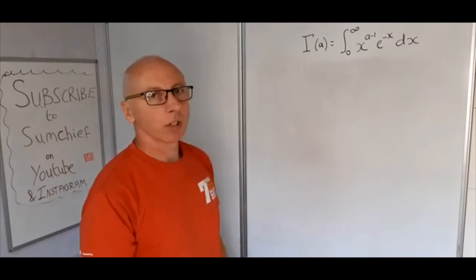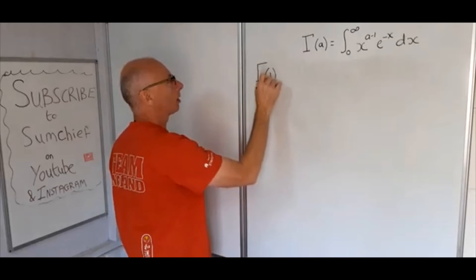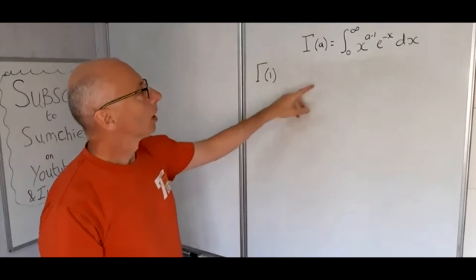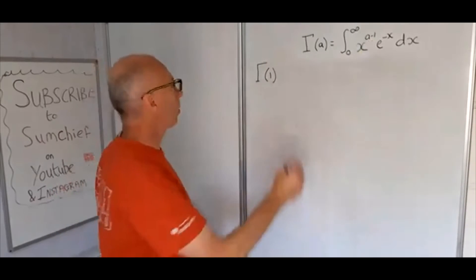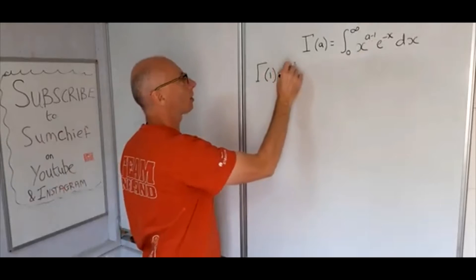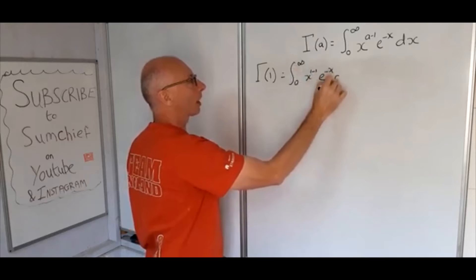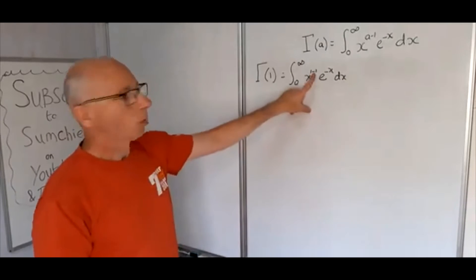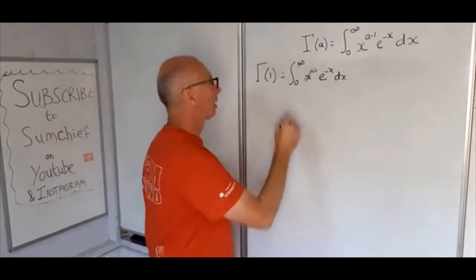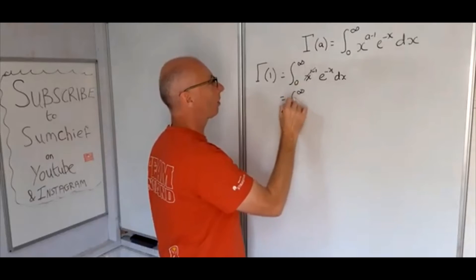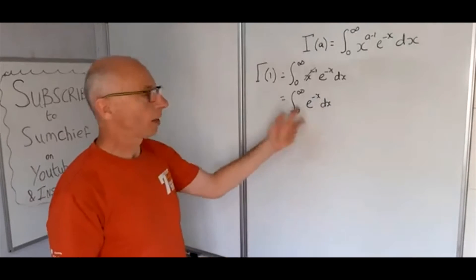Let's look at the simplest case: gamma of 1. Since a equals 1, we substitute into the definition to get the integral from 0 to infinity of x to the 1 minus 1 times e to the minus x dx. Since 1 minus 1 is 0, and anything to the power of 0 is just 1, the x term vanishes. We're left with the integral from 0 to infinity of e to the minus x dx — a straightforward integral.